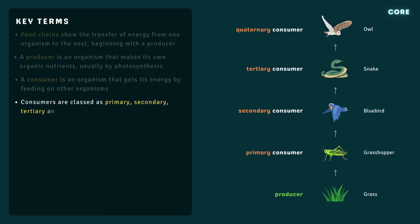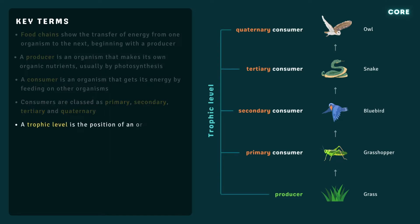Consumers may be classed as primary, secondary, tertiary, and quaternary, according to their position in a food chain. The position of an organism in a food chain, food web, or ecological pyramid is referred to as trophic level.